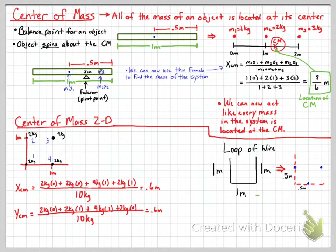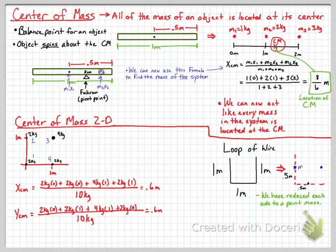Since it was one meter on each side of the loop of wire, if the left side has a center of mass in its center, it is 0.5 meters away from its edge. Each side would be 0.5 meters from its edge with its mass located at its center. We've effectively reduced each side of the loop of wire to a point mass, and we're finding the center of mass location.